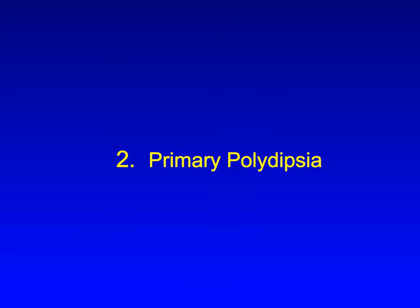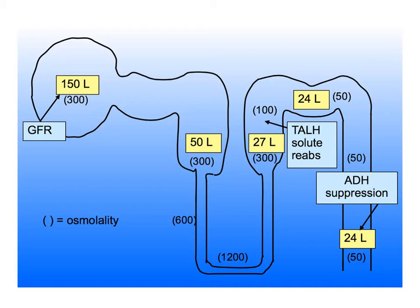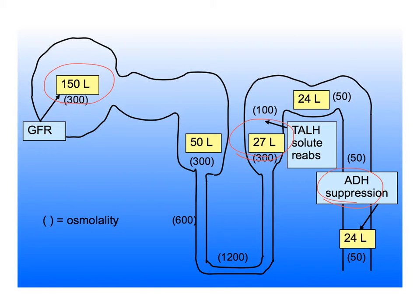The second unusual cause of hyponatremia is primary polydipsia, which is a true water intoxication. Even if everything works perfectly — even if you have a GFR of 150 liters per day, are able to reabsorb solute in the loop of Henle to make a dilute tubular fluid of 27 liters per day, and can completely suppress ADH so that no water is reabsorbed but all stays in the collecting tubule to be excreted — even then you can only make about 24 liters per day, or 1 liter per hour, of dilute urine.